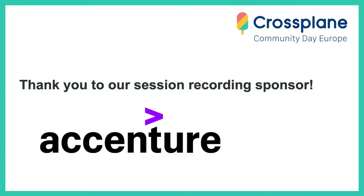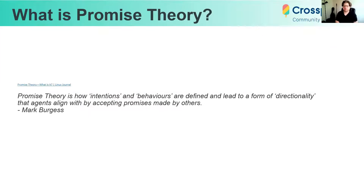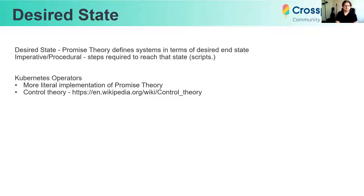Promise theory is a way we can think about interactions between agents within a system. In promise theory, we say 'get into the state' instead of 'do this.' We're familiar with working the promise theory way, maybe from using Chef and Puppet and other config management tools, or most likely from using Kubernetes.